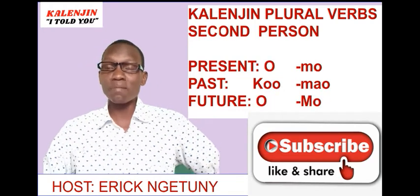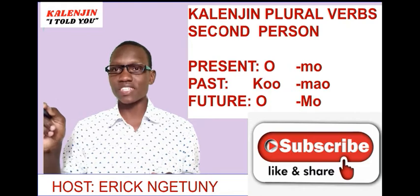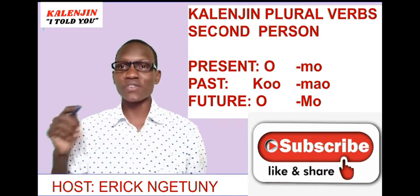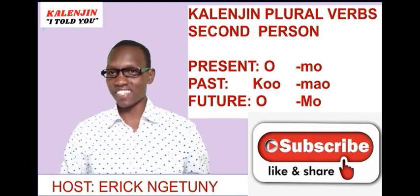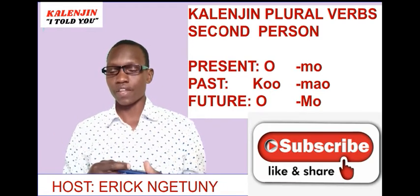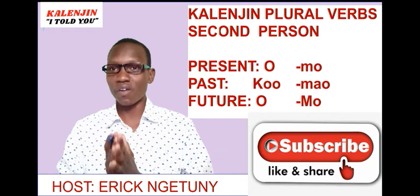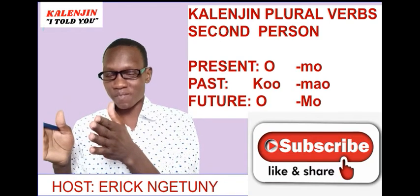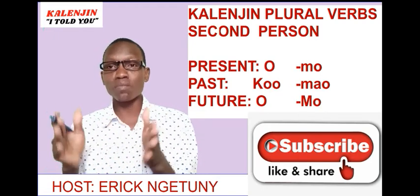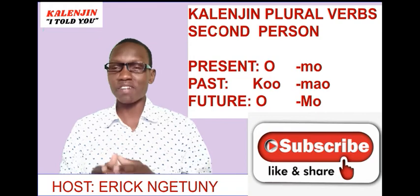So now when we look at the second person in the present tense, it takes o — o Rissoti, which means you are crying. Then for the negative, it takes mo — mo Rissoti, which means you are not crying. Mo Rissoti means you are not crossing the river. So it takes mo for the negative part of it in the present tense for the second person plural.